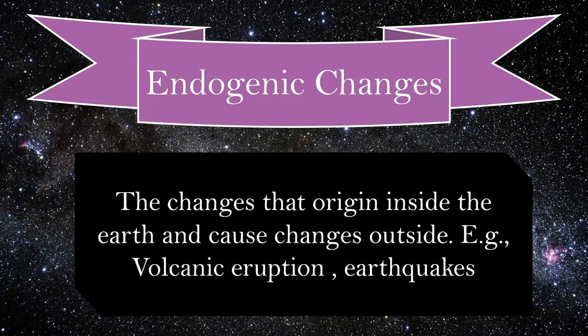The changes that originate inside the Earth and cause changes outside are endogenic changes — for example, volcanic eruption and earthquakes. From the word endogenic itself, 'endo' means inside and 'genic' means origin. The two main types of endogenic changes are volcanic eruption and earthquakes.